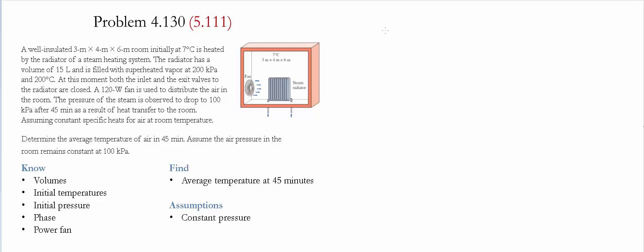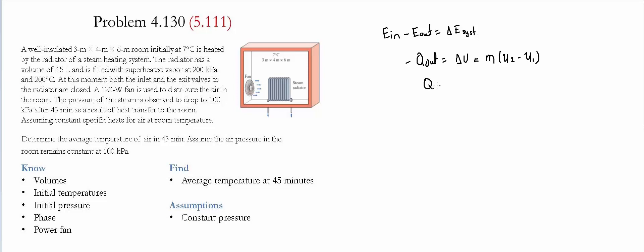We start the process with an energy balance. The amount of energy going in minus the amount of energy leaving is equal to the change of energy in the system. For this analysis, we take the system to be the radiator. The radiator has no energy going in — only heat leaving. So we take it as Q_out, which equals the change in internal energy. Since the radiator is not moving or changing position, we only have the change of internal energy: Q_out = m(U1 − U2).